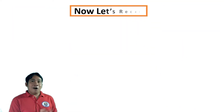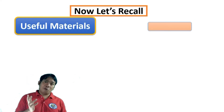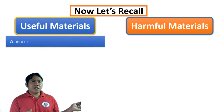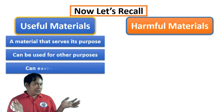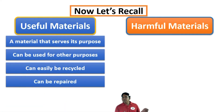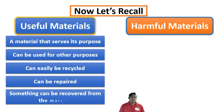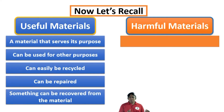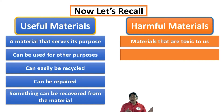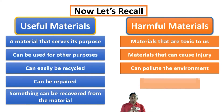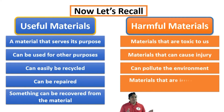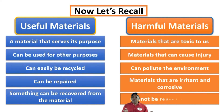Now let's recall. Useful materials are materials that serve their purpose. They can be used for other purposes, can easily be recycled, can be repaired, and we can recover something valuable from them. Harmful materials, on the other hand, are materials that are toxic to us, can cause injury, can pollute the environment, and are irritant and corrosive. They cannot be reused or recycled.